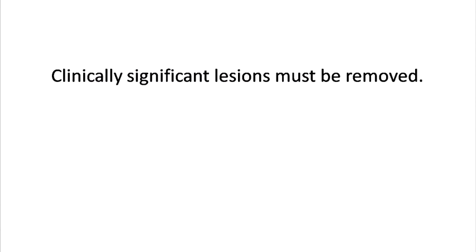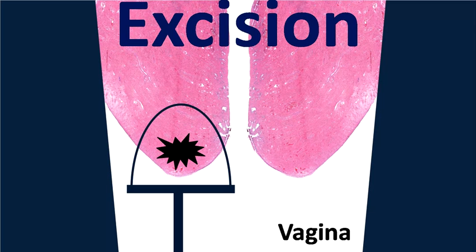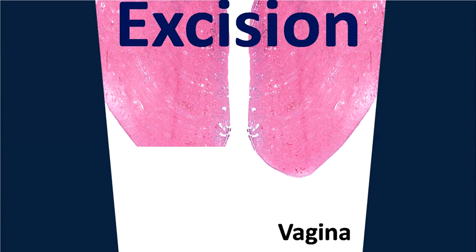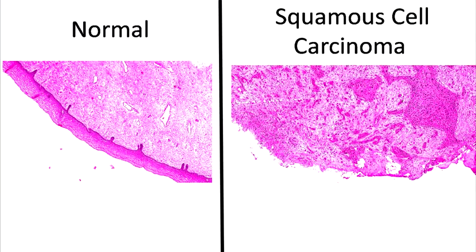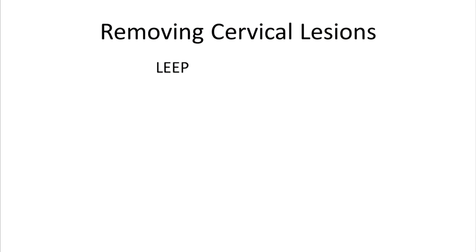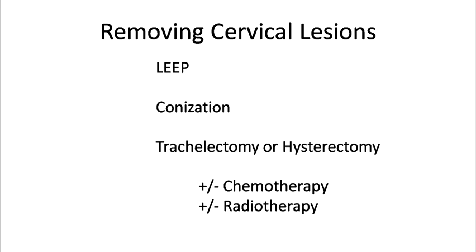Clinically significant lesions must be removed. This is frequently done with a small metal wire loop with electrical current, known as the loop electrosurgical excision procedure, or LEEP. Note the difference between normal cervix and cervical cancer. Another method for removing a cervical lesion is called conization, where a cone-shaped sample of tissue is removed. For larger lesions, a trachelectomy — where the cervix is removed — or a hysterectomy, where the entire uterus and cervix is removed, may be performed. Chemotherapy and radiation may be required, as well as removal of lymph nodes which may contain cancer.